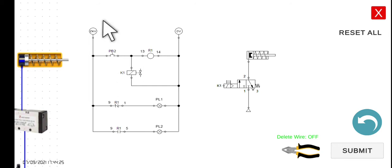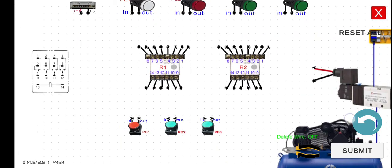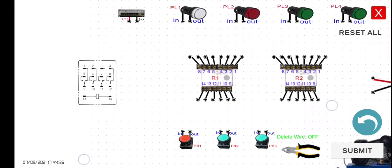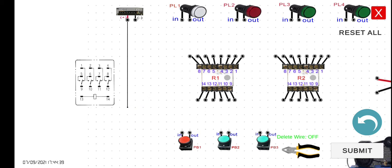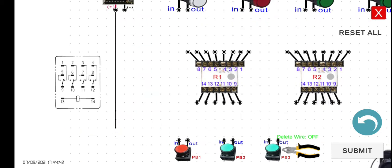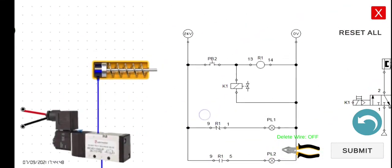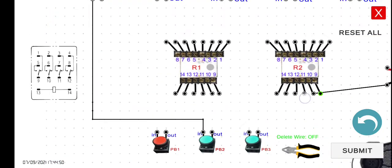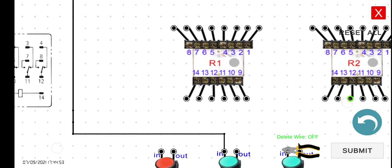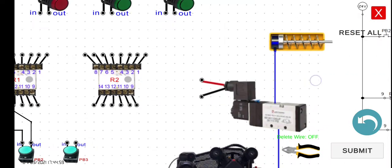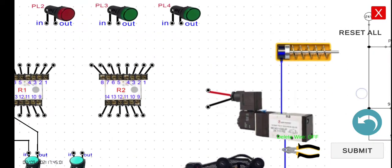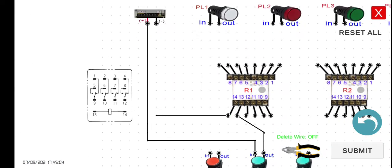Let's connect this. The 24 volts to the input of PB2, and then the output of PB2 to pin 13 of R1, and then pin 14 to 0 volts. So the positive supply connects to the input of PB2. The output of PB2 is connected to pin 13 of R1, and then pin 14 is connected to the negative.